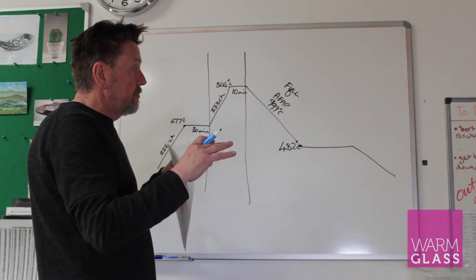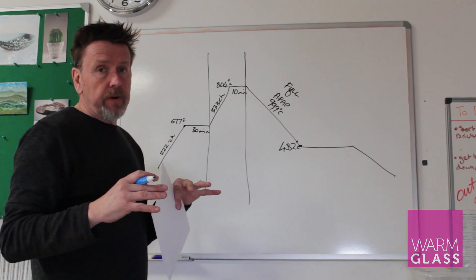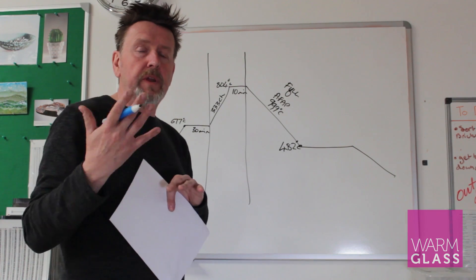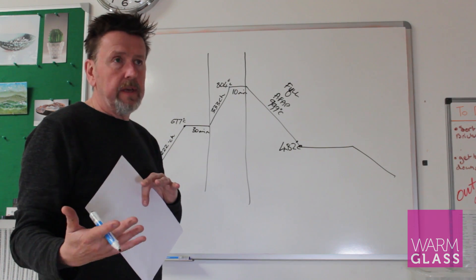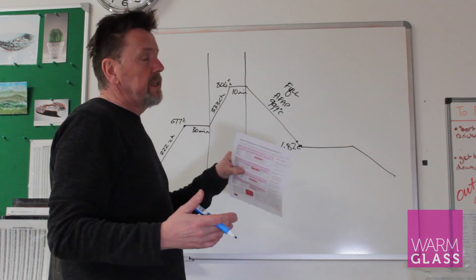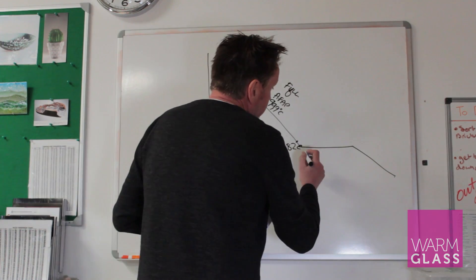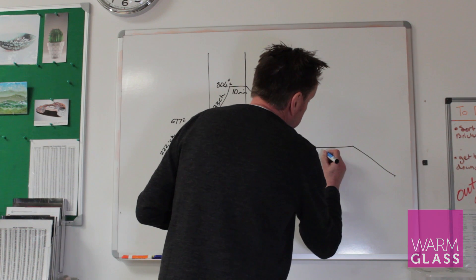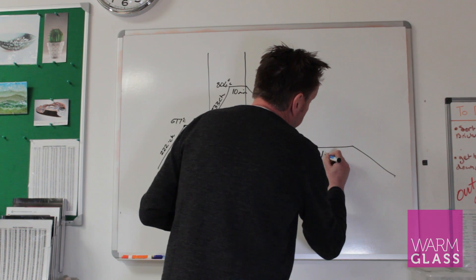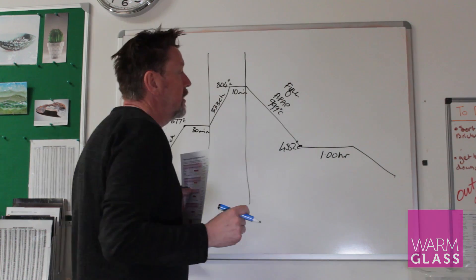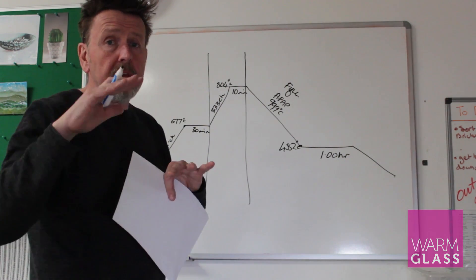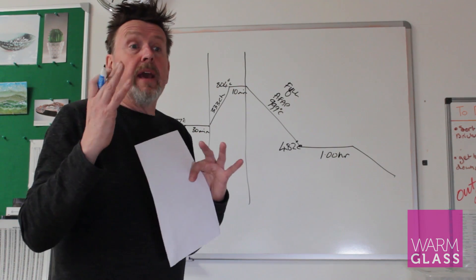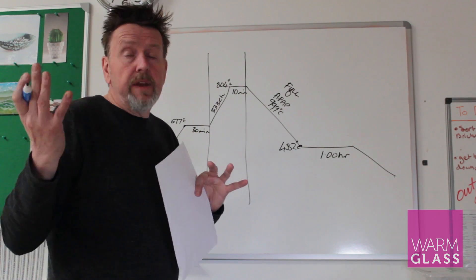So you're always wanting to bring the glass down to 482 before you anneal. If you anneal higher, the glass is still soft. If you anneal lower, you've already passed through the annealing point. So at 482 you're annealing. And then this time here will depend on the thickness of the glass. If you're doing 6 millimeters, then it's 1 hour. If you're doing something that's got different thicknesses, it might be 2 hours. If you're doing something that is really thick, it can be up to about 8 hours or even 12 hours.